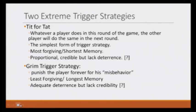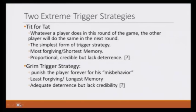So let us talk about 2 extreme cases of trigger strategies. One is called tit-for-tat, which we talked about right in the beginning when we started talking about repeated games. Whatever a player does in this round of the game, the other player will do the same in the next round — you are just mimicking your opponent. This is the simplest form of trigger strategy and is the most forgiving, or in other words, has the shortest memory, because if someone defects for 1 period they get punished only for 1 period and immediately they can go back to cooperation. It is proportional and it is credible, but it lacks deterrence.